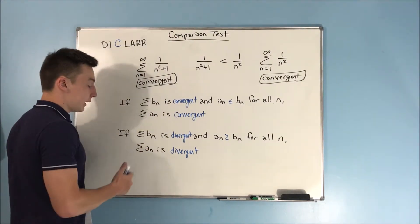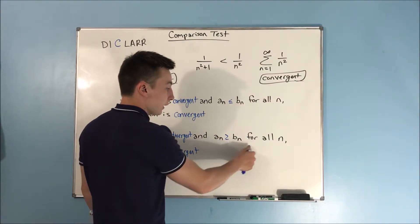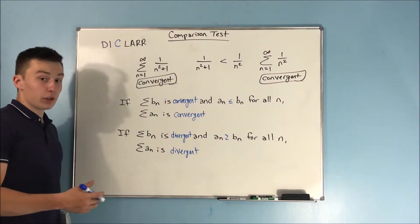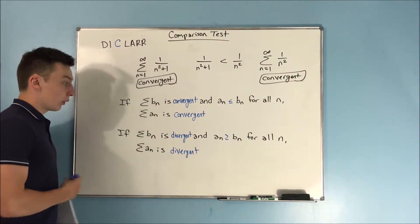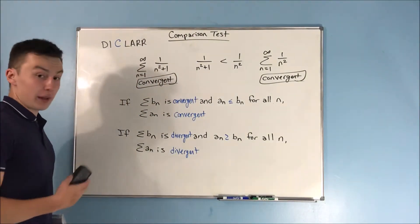Following that same logic, if the sum of b sub n is divergent and a sub n is greater than or equal to b sub n for all n, then you're going to have the sum of a sub n being divergent as well. So we're just going to do a quick example and then that will be it.